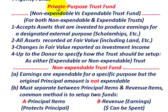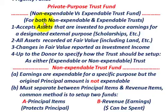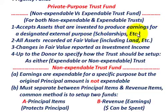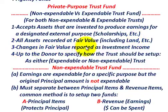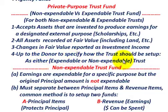Looking at the private purpose trust fund — non-expendable versus expendable — there are features common to both. First, they accept assets that are invested to produce earnings for a designated external purpose, such as scholarships. Second, all assets are recorded at their fair value, including land and investments. Third, changes in fair value are reported as investment income. Fourth, it's up to the donor to specify how the trust should be set up, either as an expendable or a non-expendable trust fund.